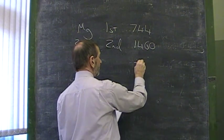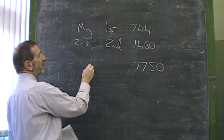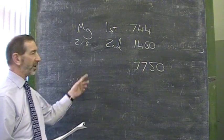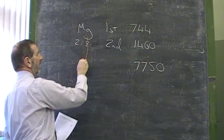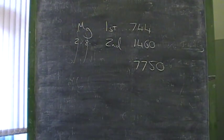But the third electron is now being removed from an inner shell. And that's reflected in the value which rockets to 7750. So we find, much as predicted, easy to remove the outer two electrons, but much more difficult to remove the third one. The third one being in an inner shell.